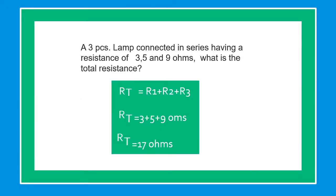In the next example, three pieces of lamps are connected in series, having resistances of 3, 5, and 9 ohms. What is the total resistance? Since this is a series circuit, we just add the individual resistances to find the total resistance. RT equals 3 plus 5 plus 9 ohms. The total resistance is 17 ohms.